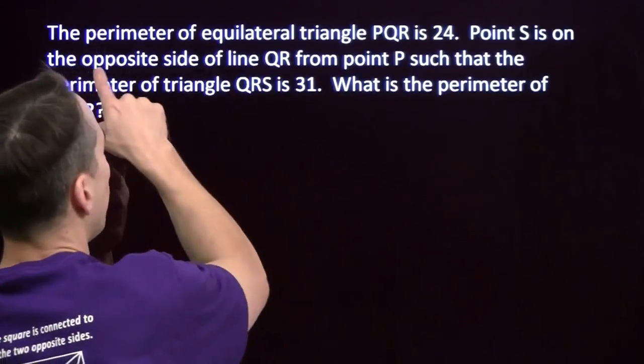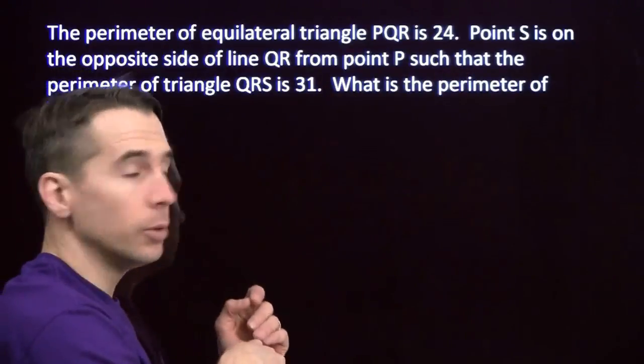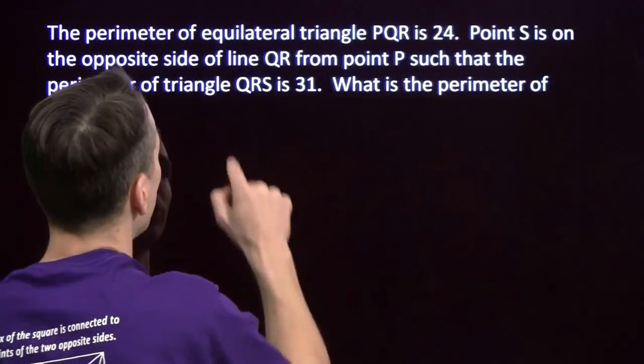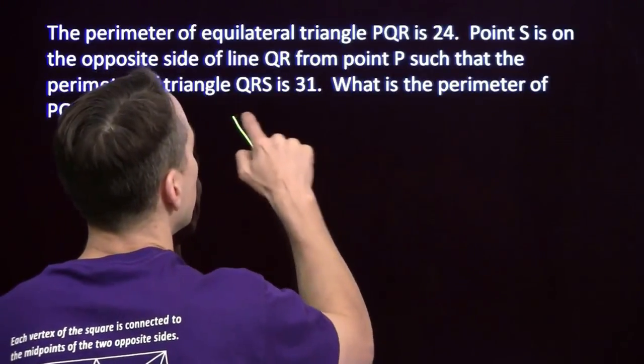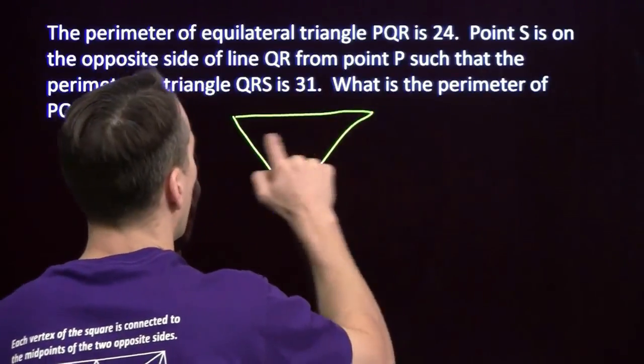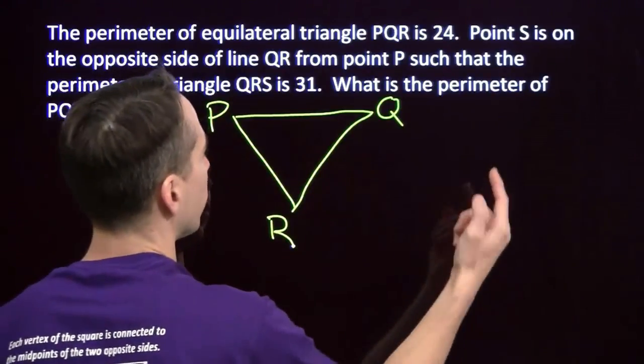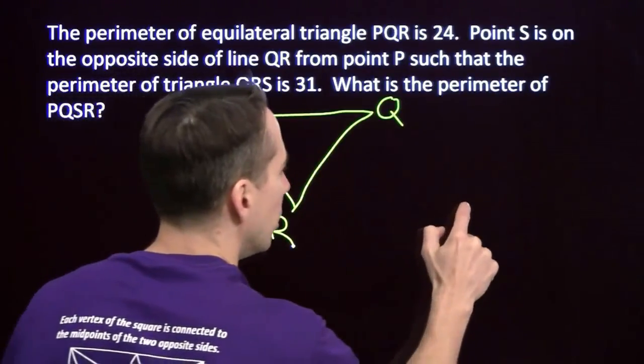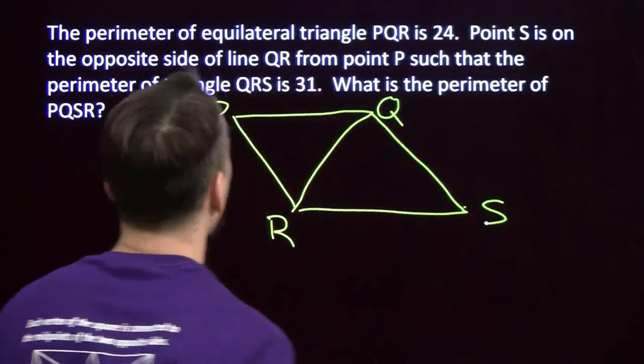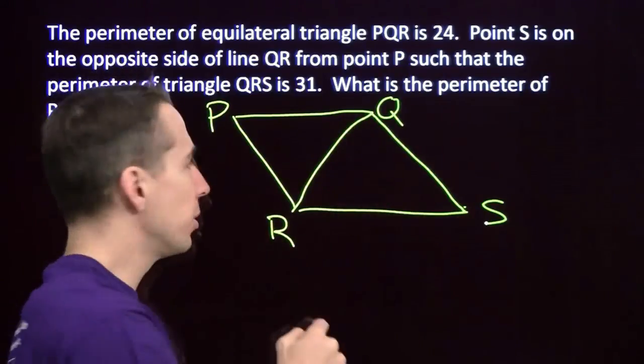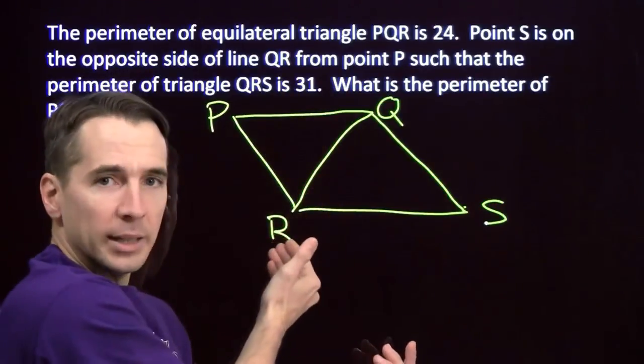Alright, we know what we're going to do here. Read the whole question. Equilateral triangle PQR. S is on the opposite side of QR from point P, such that the perimeter of QRS is 31. So if we start off with a triangle again, I'm going to label this one P, this Q, and this is R. So then I can put S over here somewhere. I don't really know where it is, but we'll just stick it out here somewhere. We'll call that S. And I want to find the perimeter of PQSR, the perimeter of this triangle. So I at least have the triangles up here, but I have a lot more information in this problem that's not in my diagram yet.